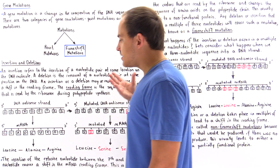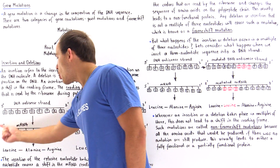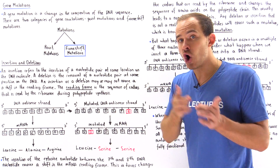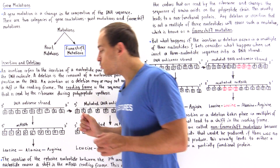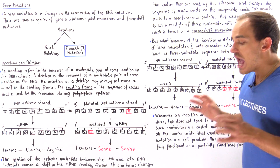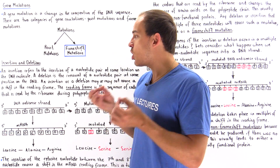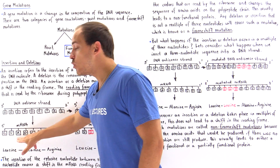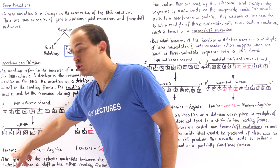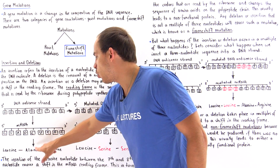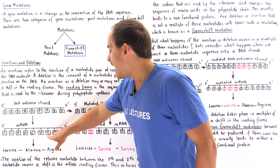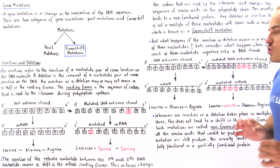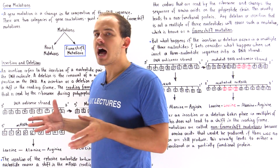Once we synthesize the mRNA molecule, the ribosomes will translate the nucleotide sequence into the amino acid sequence using the genetic code, which consists of 64 codons. CUA corresponds to the amino acid leucine, GCU corresponds to alanine, and CGC corresponds to arginine.